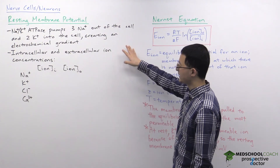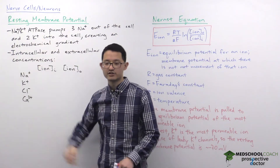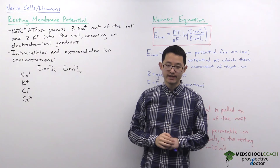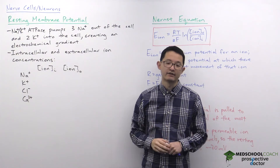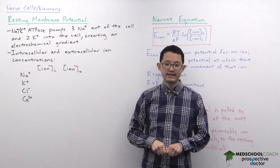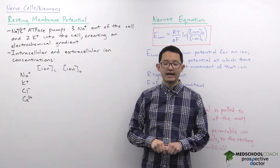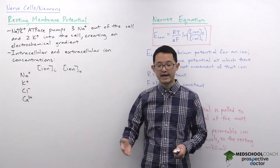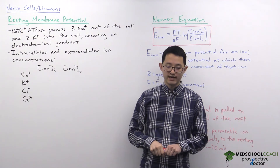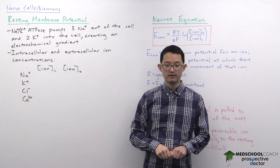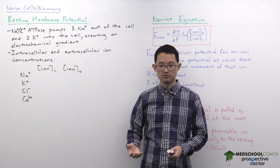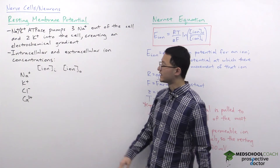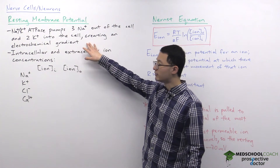To discuss how we get the resting membrane potential, let's talk about the sodium-potassium pump, or the Na⁺/K⁺ ATPase. As you can see from this diagram, the sodium-potassium pump is a protein that uses ATP to pump three sodium cations out of the cell and two potassium cations into the cell as a form of active transport. The result of this activity is that it creates an electrochemical gradient.